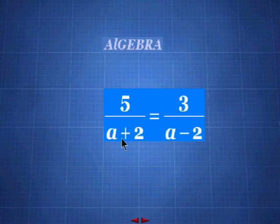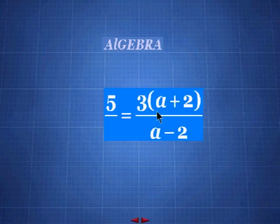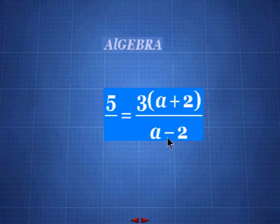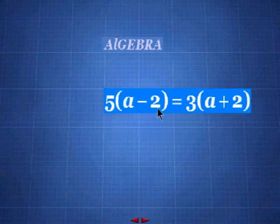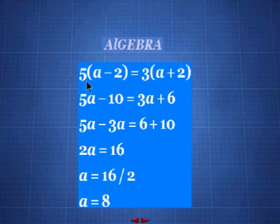We take the denominator on the left side, (a + 2), and multiply it by the numerator on the right side, giving: 5 = 3(a + 2) ÷ (a − 2). Then we take the denominator on the right side, (a − 2), and multiply it by 5. The end result after cross-multiplication is: 5(a − 2) = 3(a + 2). Now let's simplify further by expanding the parentheses.